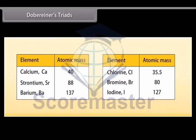For example, in a triad of calcium Ca-40, strontium Sr-88, and barium Ba-137, the mean of the atomic masses of the first and third elements is equal to the atomic mass of the second element. That is, 40 plus 137 divided by 2, which is 88.